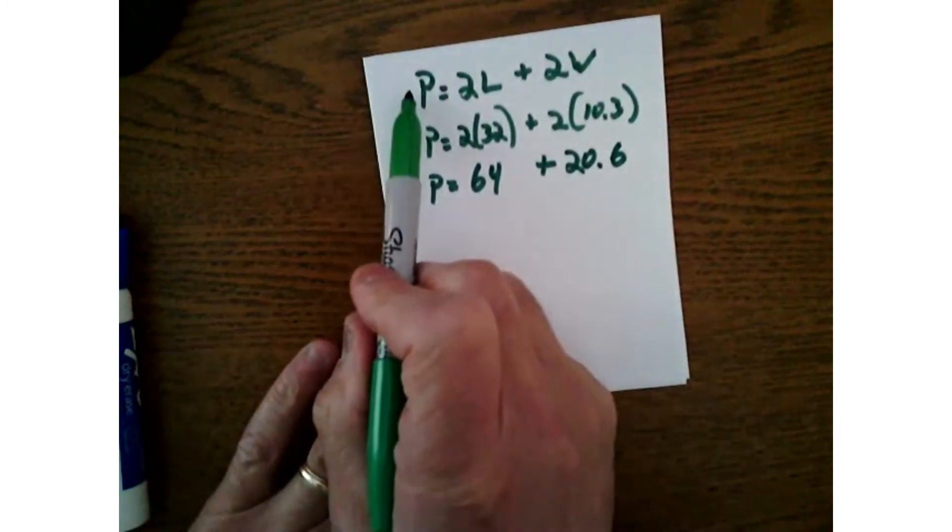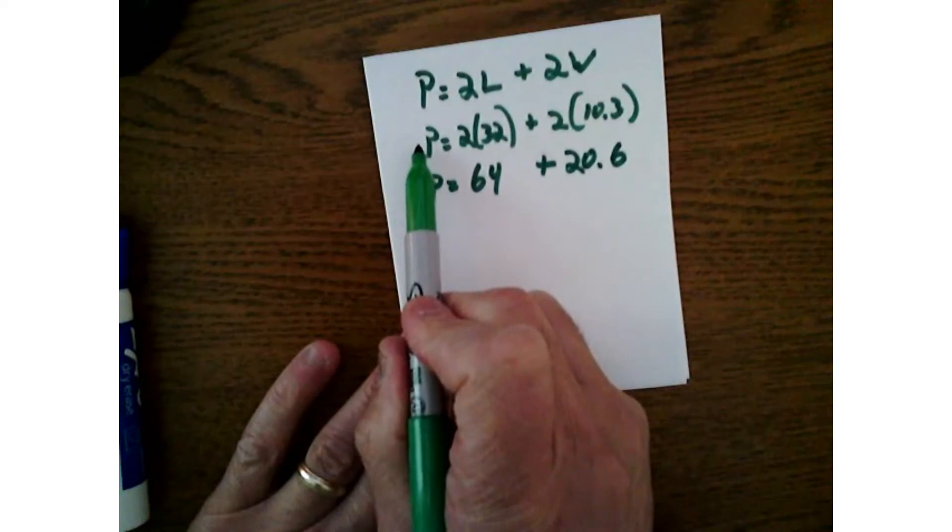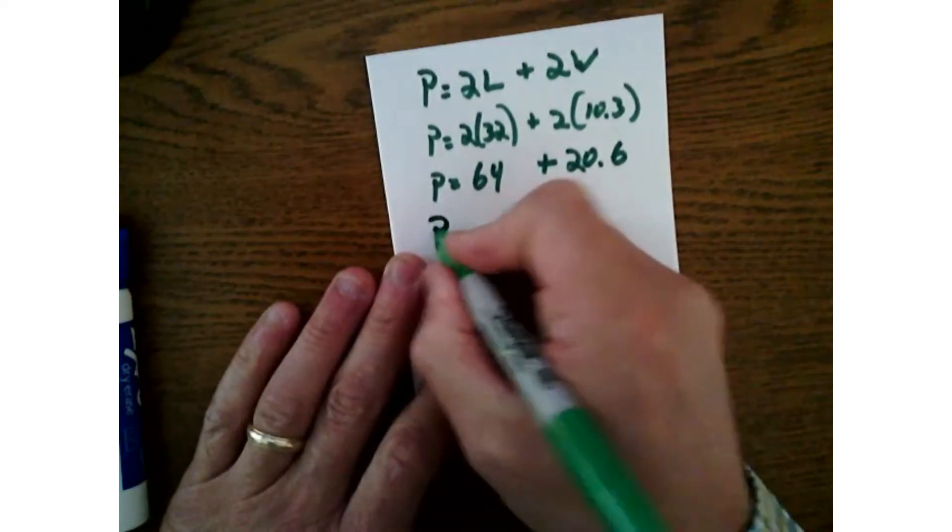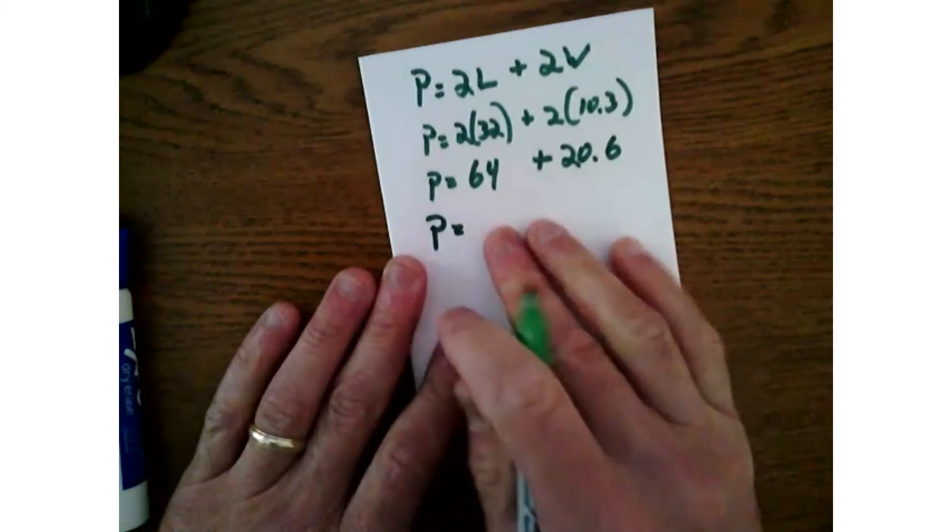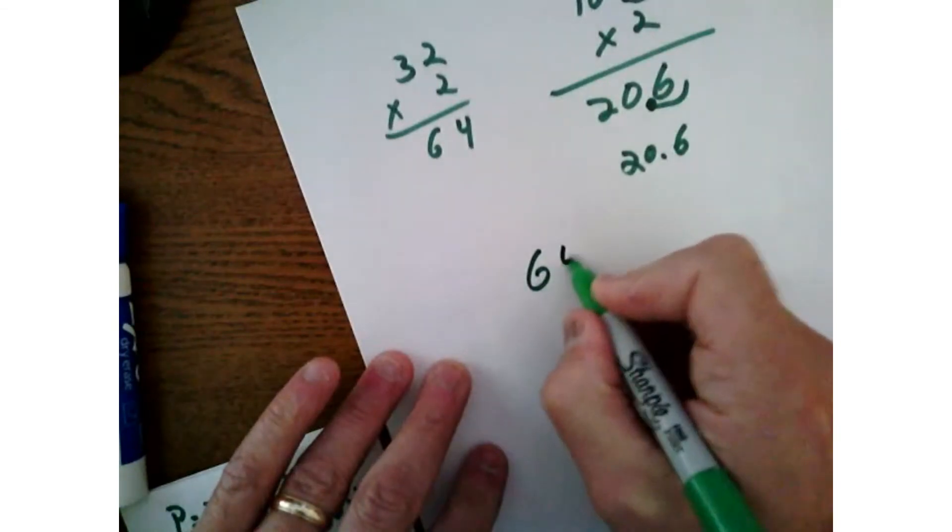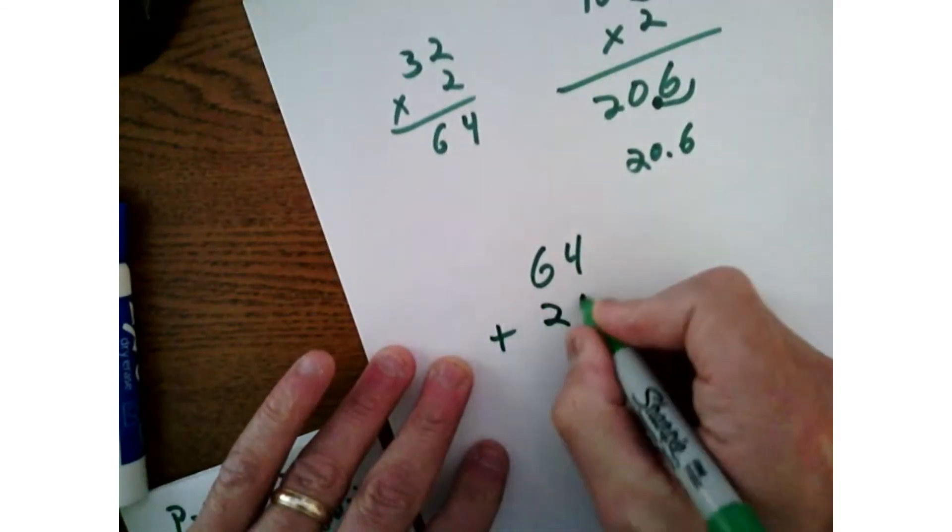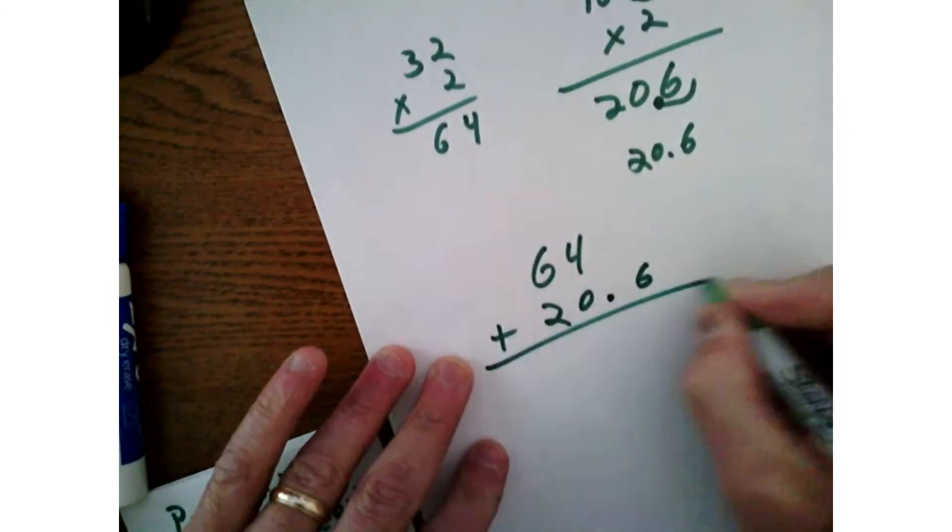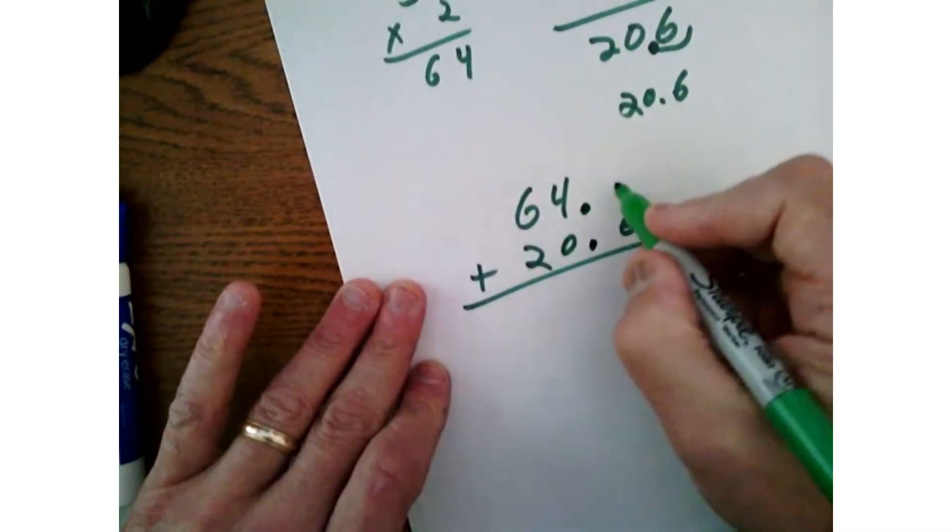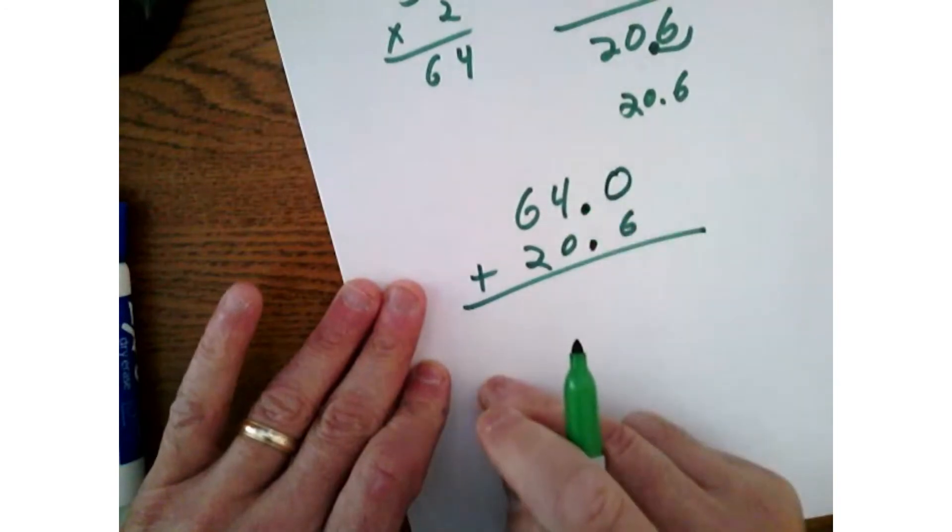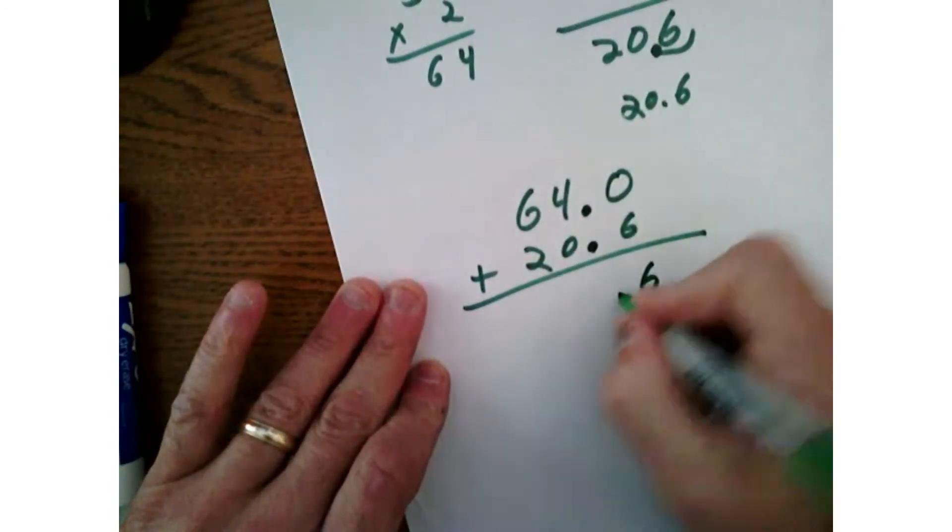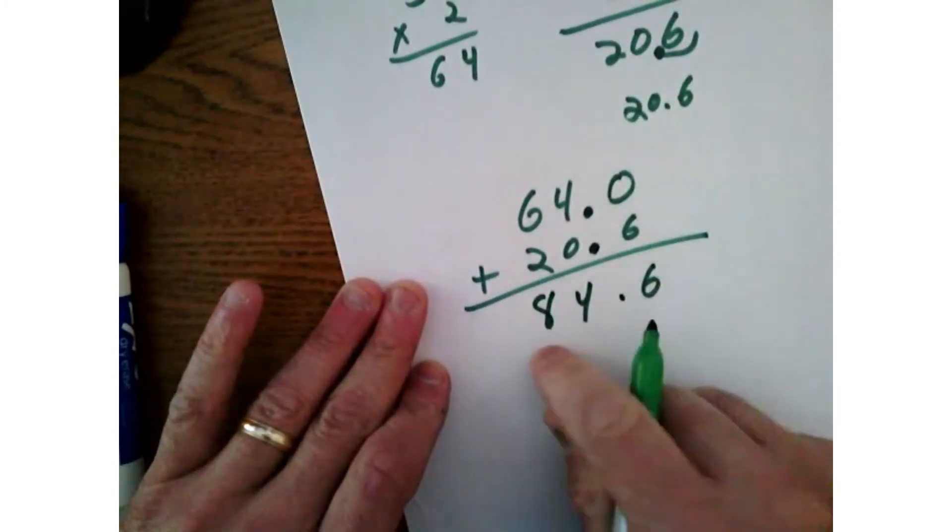Okay, so now you have three lines: a formula line, a substitution line, this line here where you did your multiplication, and then your last line which would be your solution line. This is just where you show the end result. So you'd go back over here and do 64 plus 20 and six tenths. Make sure you're lining up these decimal points. 64 doesn't have a decimal, so you add one at the end. This is very important. Then we have a 64, that was 84.6. And we said that this one was in inches, so that's 84.6 inches.